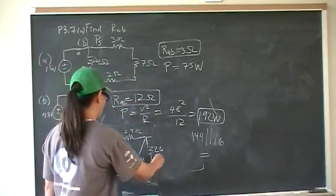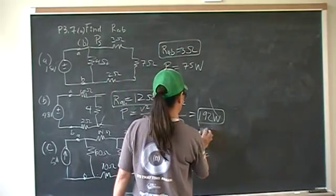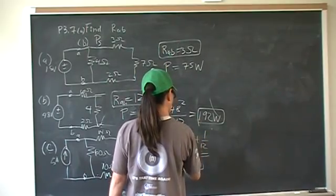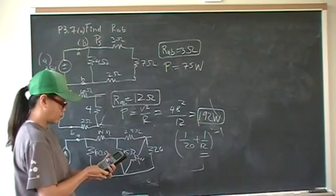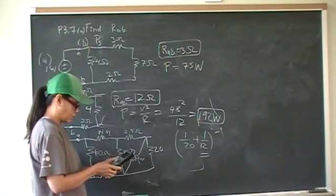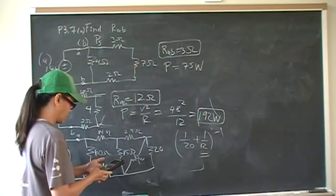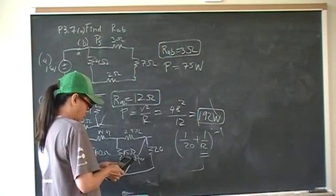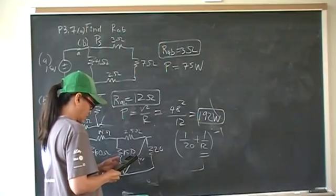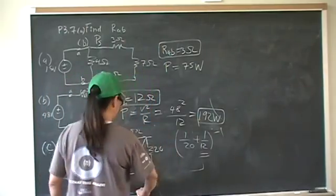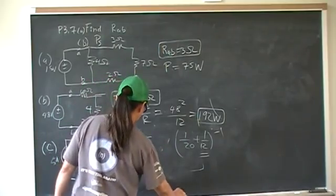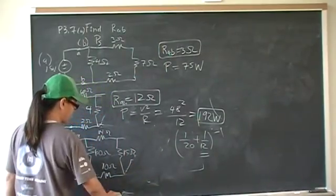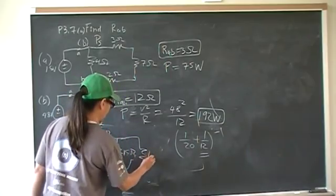Now I have 20 in parallel with 12. That gives me 7.5. So if I replace that with 7.5, 7.5 in series with 2.5 is going to give me 10.